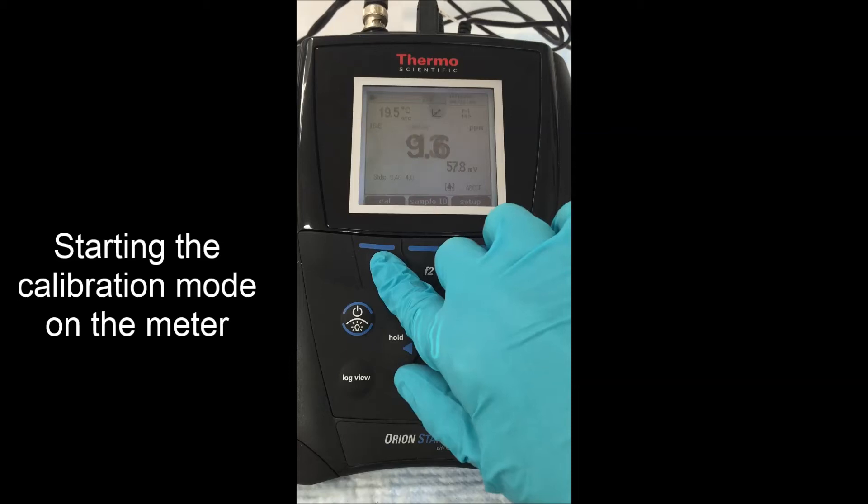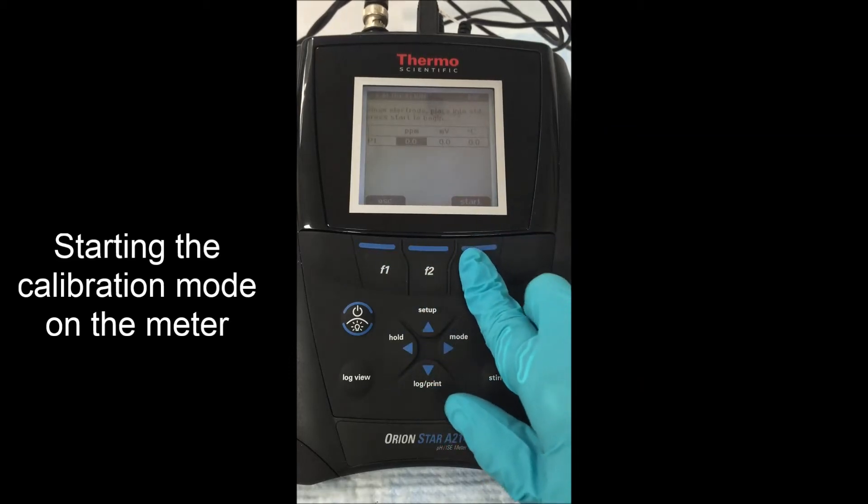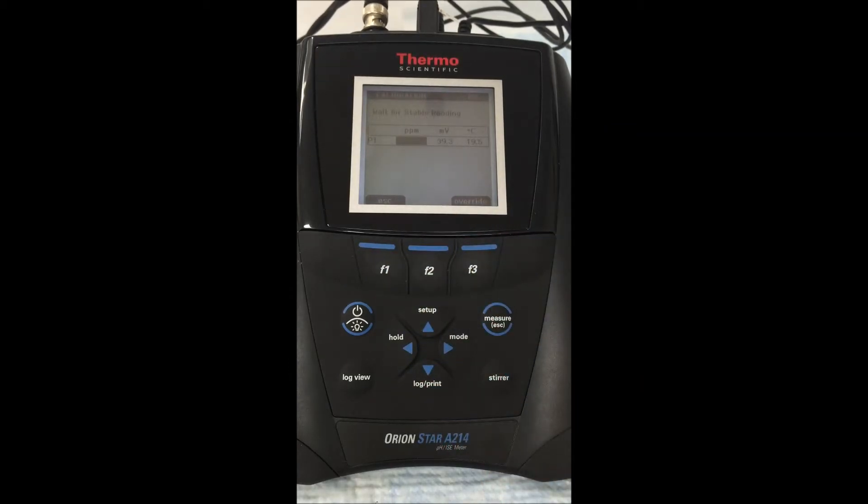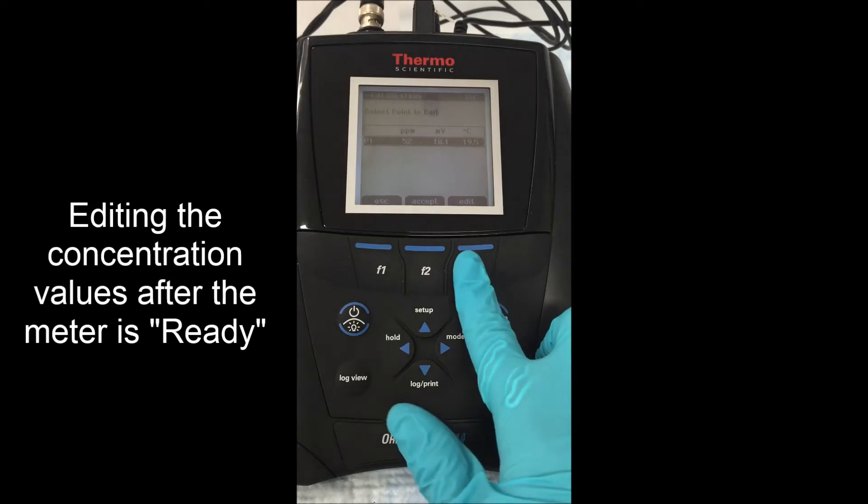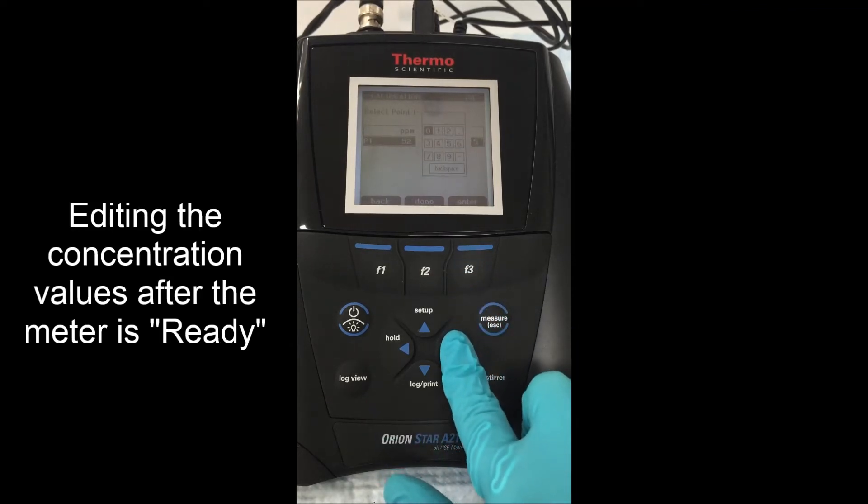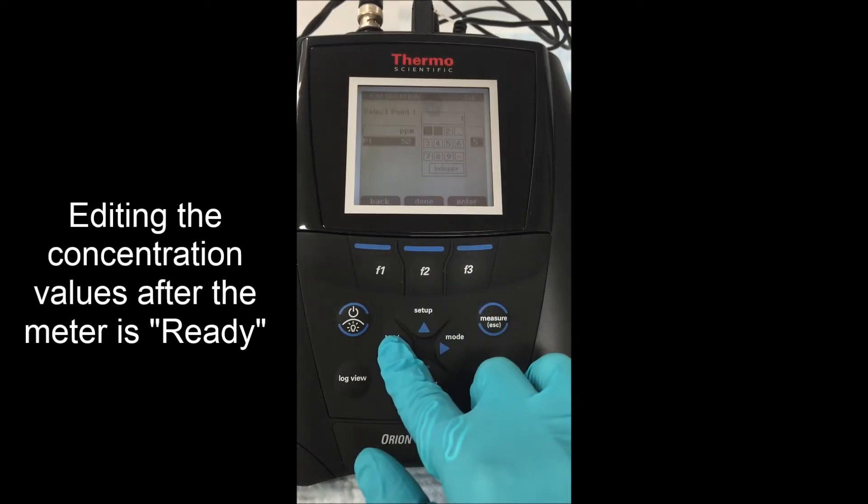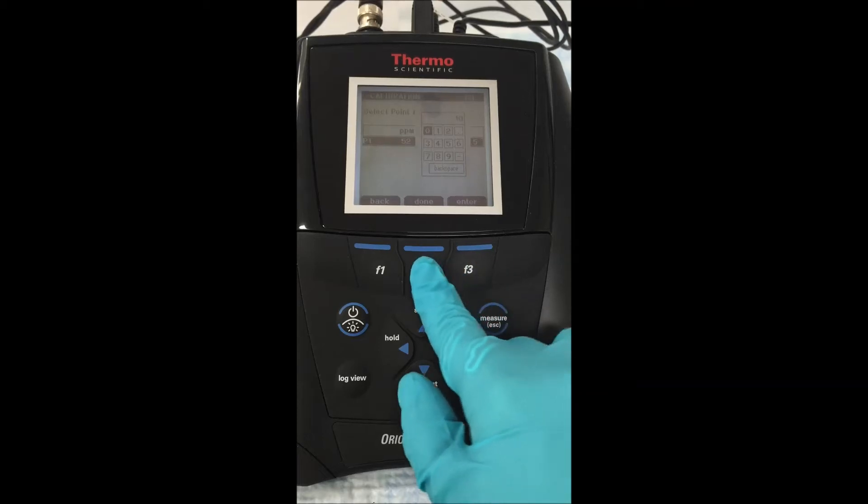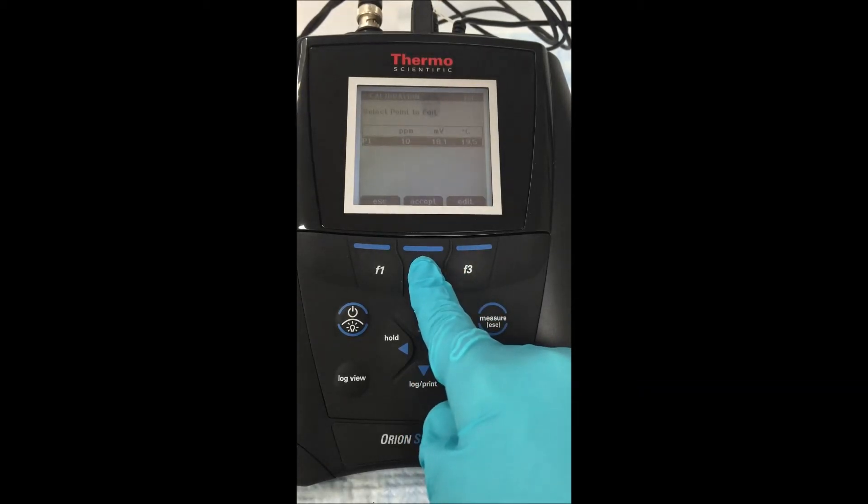Moving on to the meter, you want to start your calibration by hitting F1 to start the calibration mode. Hit enter when you're ready and the meter will start the calibration. Once the meter has started the calibration procedure and it locks onto a value, it will register as ready. Go ahead and edit that value to enter in that 10 part per million solution that we are testing. Save and on to the next point.